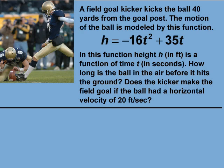A field goal kicker kicks the ball 40 yards from the goal post. The motion of the ball is modeled by this function: h equals negative 16t squared plus 35t. In this function, height h in feet is a function of time t in seconds. How long is the ball in the air before it hits the ground? Does the kicker make the field goal if the ball had a horizontal velocity of 20 feet per second?